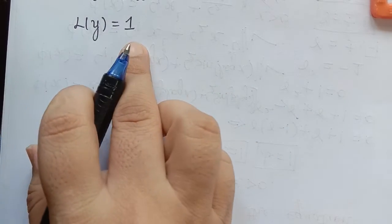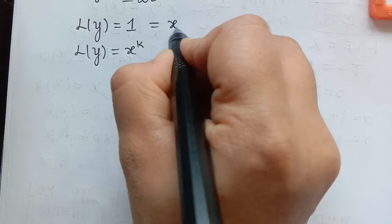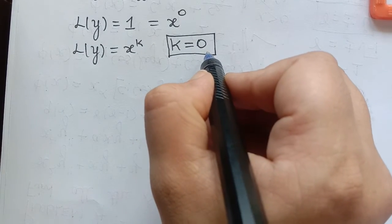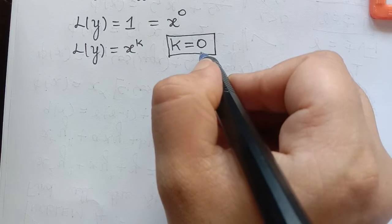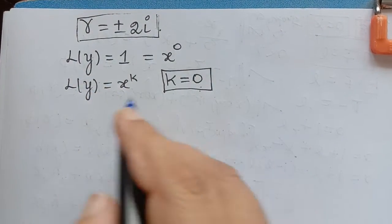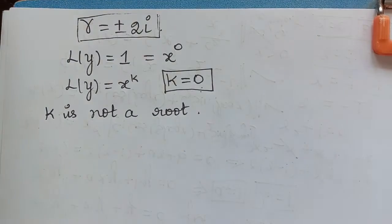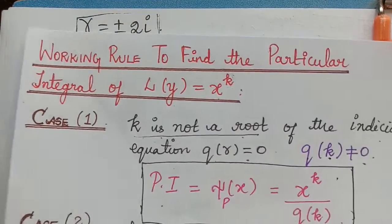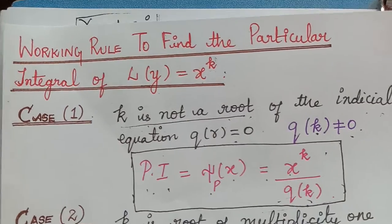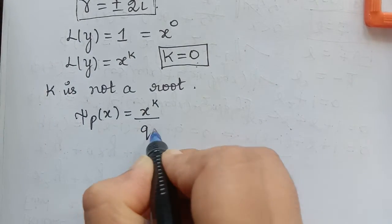In the given question, L(y) = 1. Comparing with L(y) = x to the power k, we write 1 as x to the power 0, so k = 0. We check whether k = 0 is a root of the indicial equation — it is not, since the roots are plus or minus 2i. So k is not a root, and the particular integral is ξₚ(x) = x to the power k divided by q(k).